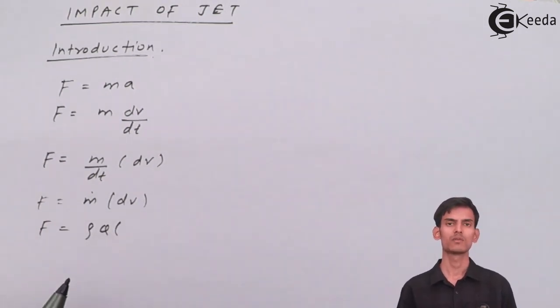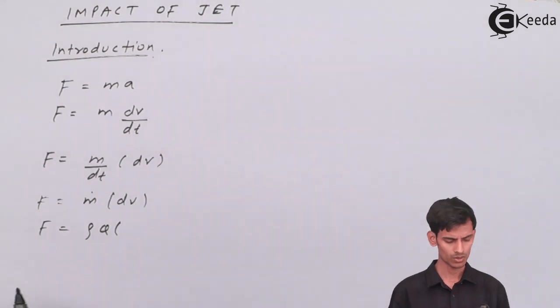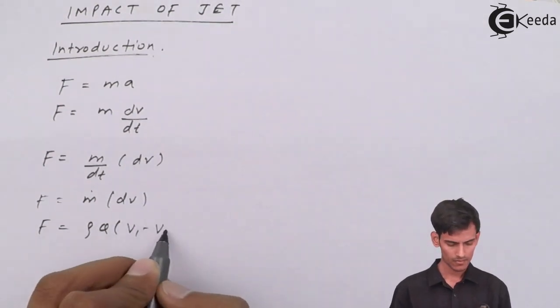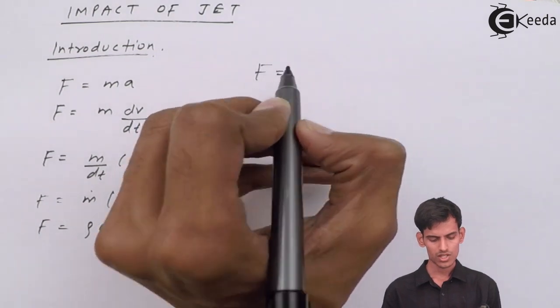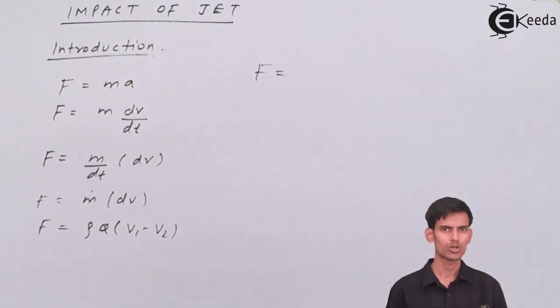dv is nothing but change in velocity which is v1 minus v2. Discharge we all know is nothing but area into velocity.